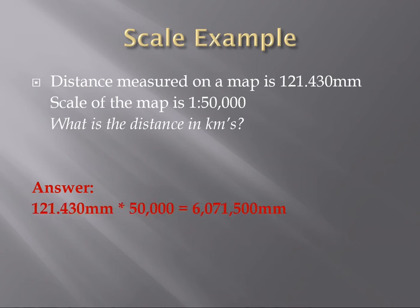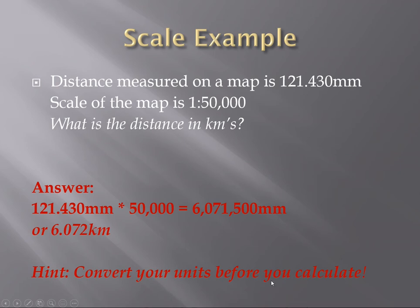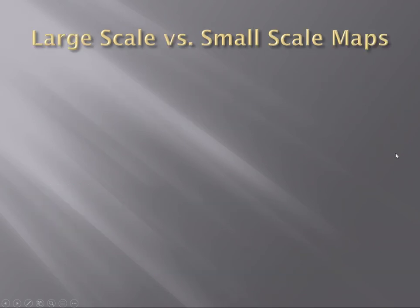This is approaching in a different way than what I teach in the remote sensing class. We can take our distance on the map and we can multiply it by the bottom part of this, the fraction. And that's going to give us our distance on the ground. And then we convert it to kilometers. So 1 over 50,000 equals 121.43 millimeters over whatever the distance on the ground is. I suggest converting the units before you calculate, but make sure that they're the same. They always have to be the same units.